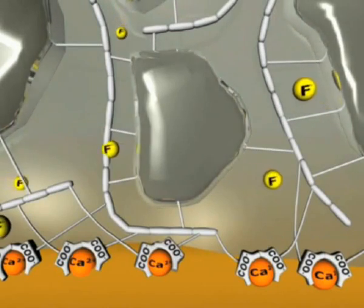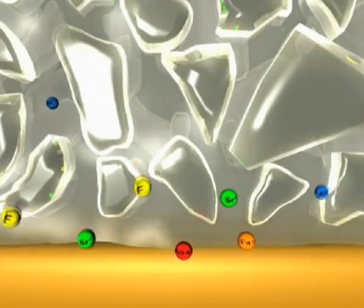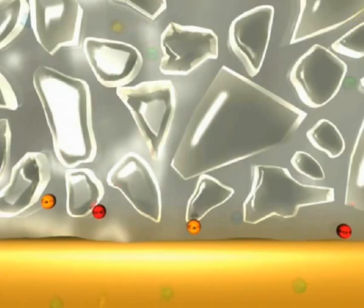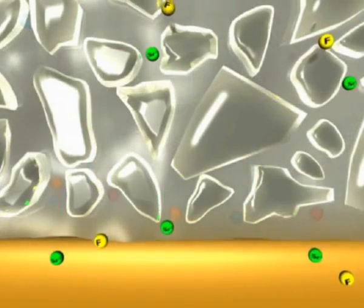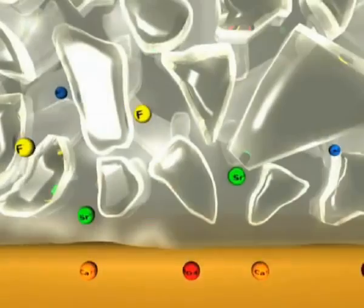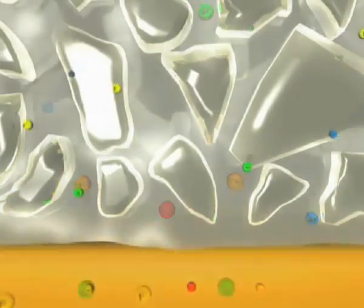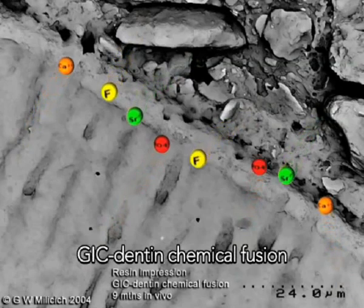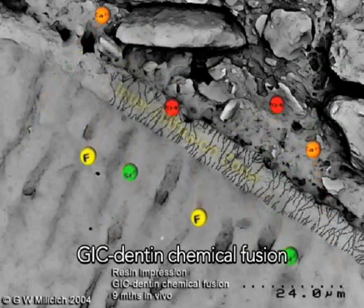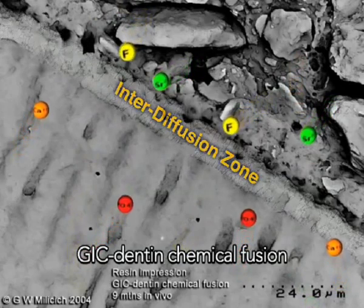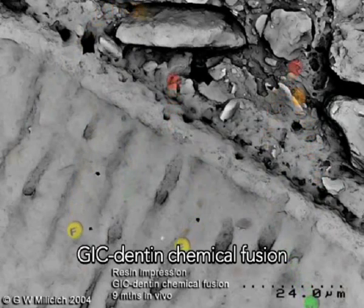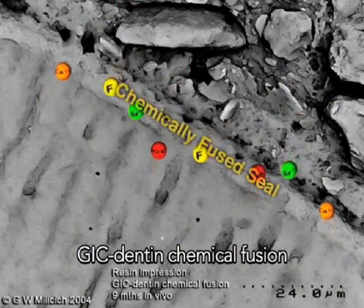In addition to chemical adhesion to calcium in the tooth, a fusion bonding process takes place as well. Calcium and phosphate ions from the polyacid-treated dentin and enamel, and strontium and fluoride ions from the unset glass ionomer, intermix and precipitate, forming an interface called the interdiffusion zone. This zone is stronger and more acid-resistant than either the glass ionomer or the tooth. The combination of the interdiffusion zone and the chemical bonding provides the basis for a strong, stable adhesive interface, and creates a bacteria-proof seal for the cavity, best described as a chemically fused seal.